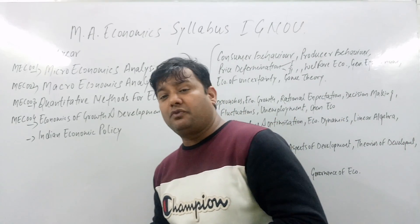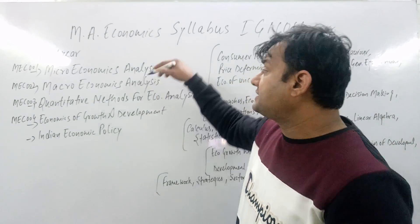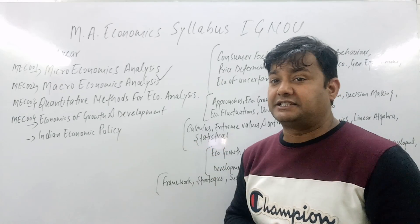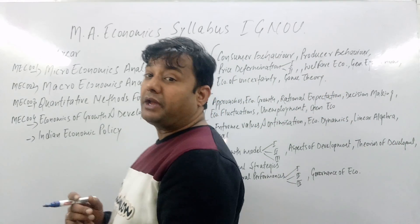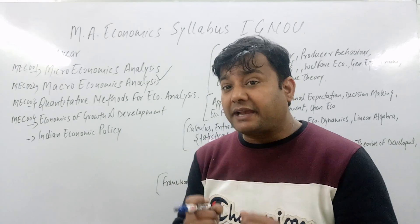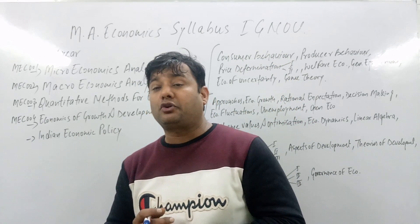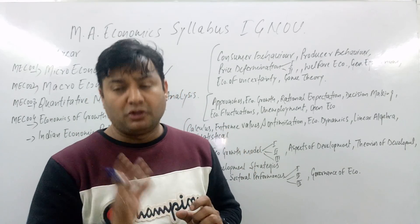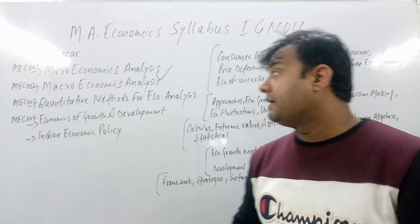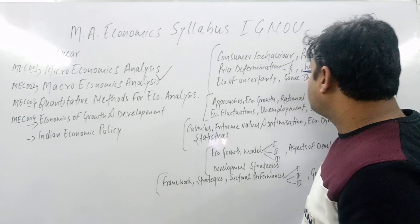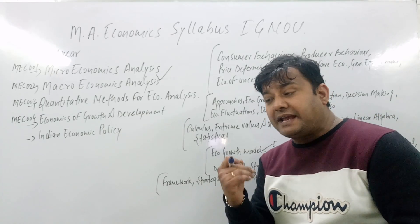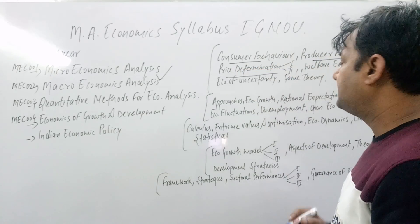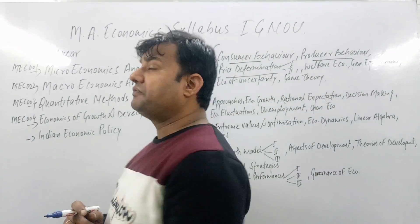Let's start the class. For first year students, the first thing to work out is MEC 001, that is Microeconomic Analysis. The first paper is Microeconomic Analysis, which covers consumer behavior, producer behavior, and price determination — price determination one and two.